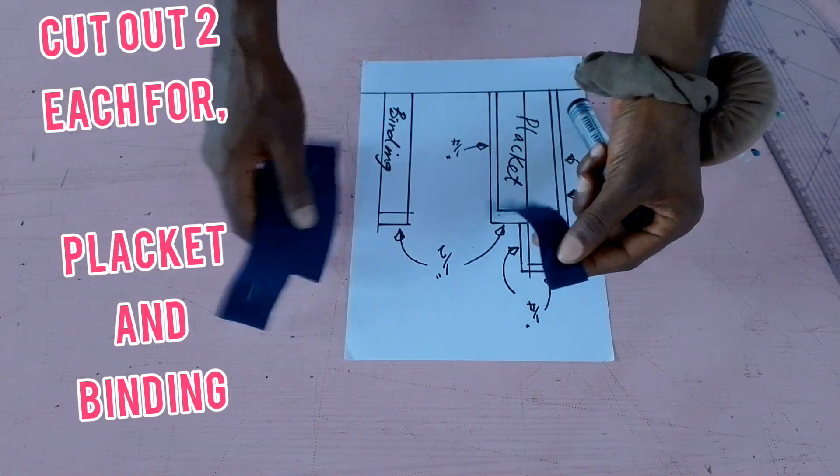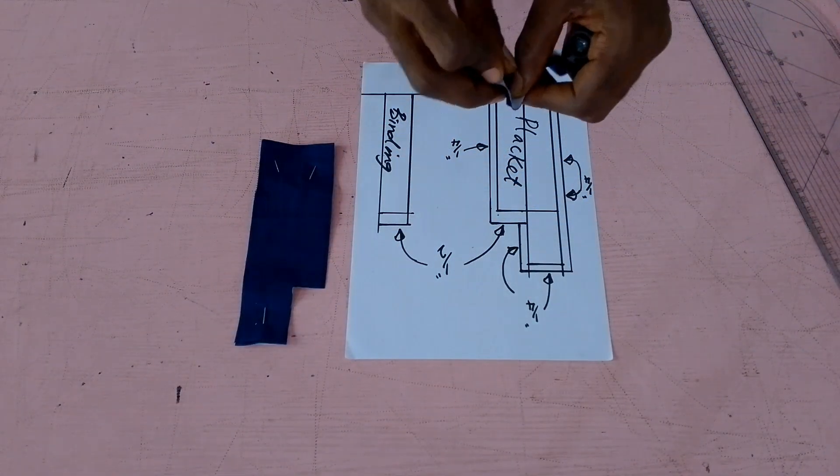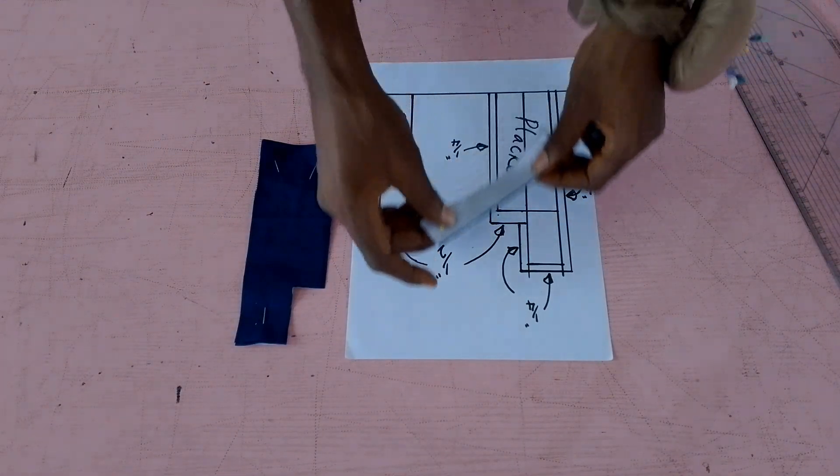Cut two pieces each. In the next tutorial, I'm going to be showing you how to sew this. Bye for now.